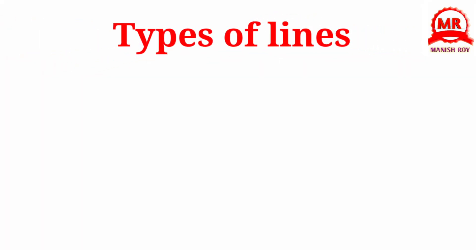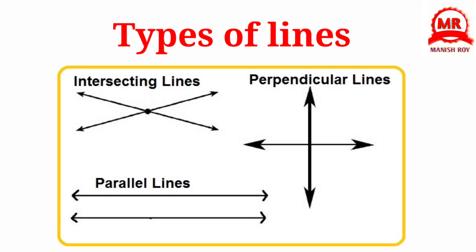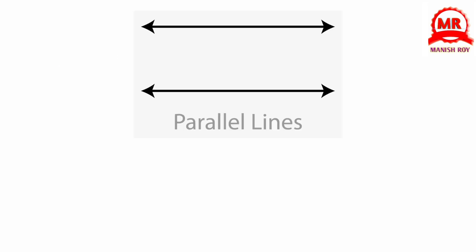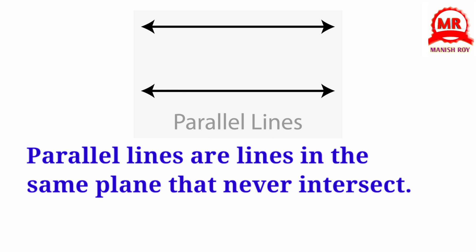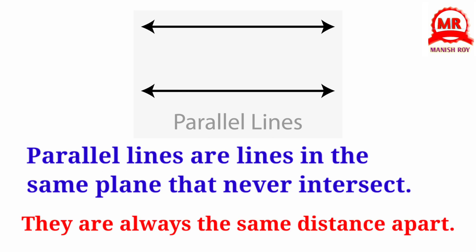There are three types of lines: Parallel Lines, Intersecting Lines, and Perpendicular Lines. Parallel lines are lines in the same plane that never intersect. They are always the same distance apart.